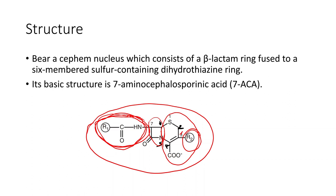For example, if you want to enhance penetration of the medication into the subarachnoid space to achieve good CSF concentration — such as for treating meningeal infections — you need to modify the R2 side chain attached to carbon 3. So to summarize: modification of R1 attached to carbon 7 results in change in the antibacterial spectrum; modification of R2 attached to carbon 3 results in change in the pharmacological properties.